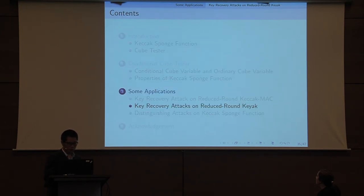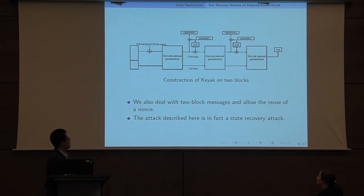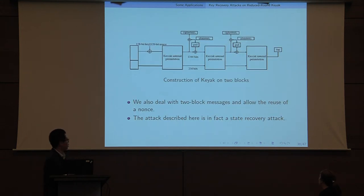Here we come to the key recovery attack on reduced-round KeyAK. This is very natural because we have a lot of output bits, so we can reverse the key step in the last round. Because of this, we can extend the former key recovery attack by one round. The only difference is the bit conditions and the key we guessed. Actually, this is a state recovery attack: when we get 256 bits, we can reverse the first Keccak internal permutation and obtain the master key.